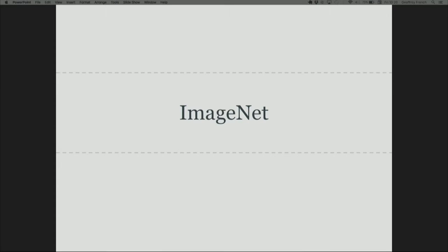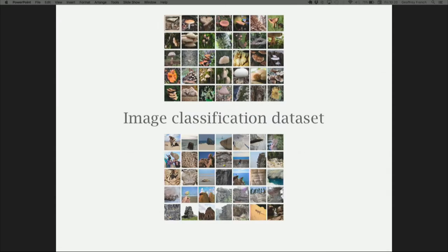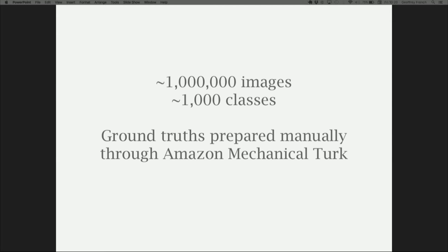Now time to get into the meat of the talk. And what better place to start than ImageNet? ImageNet is an academic image classification dataset. You've got about a million images — it might even be more now — divided into a thousand different classes: various types of dog, various types of cat, flowers, buckets, rocks, snails.